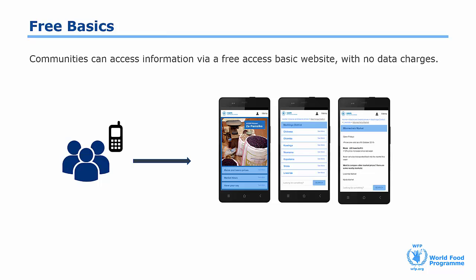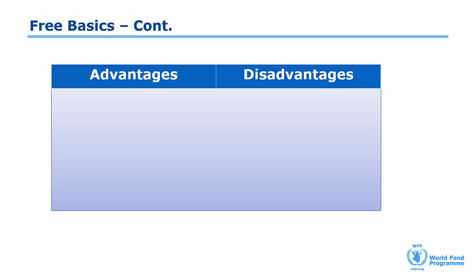MVAM launched a FreeBasics website in November 2016 in Malawi. On our website, we share the food prices and market information that we collect with our traditional MVAM tools on a weekly basis. The website also has a short surveying tool to get information about the food security situation in their community. The advantages of such a tool are that it's very low cost to set up and maintain. As all internet users in the country can access it, it has the potential to reach millions of people.